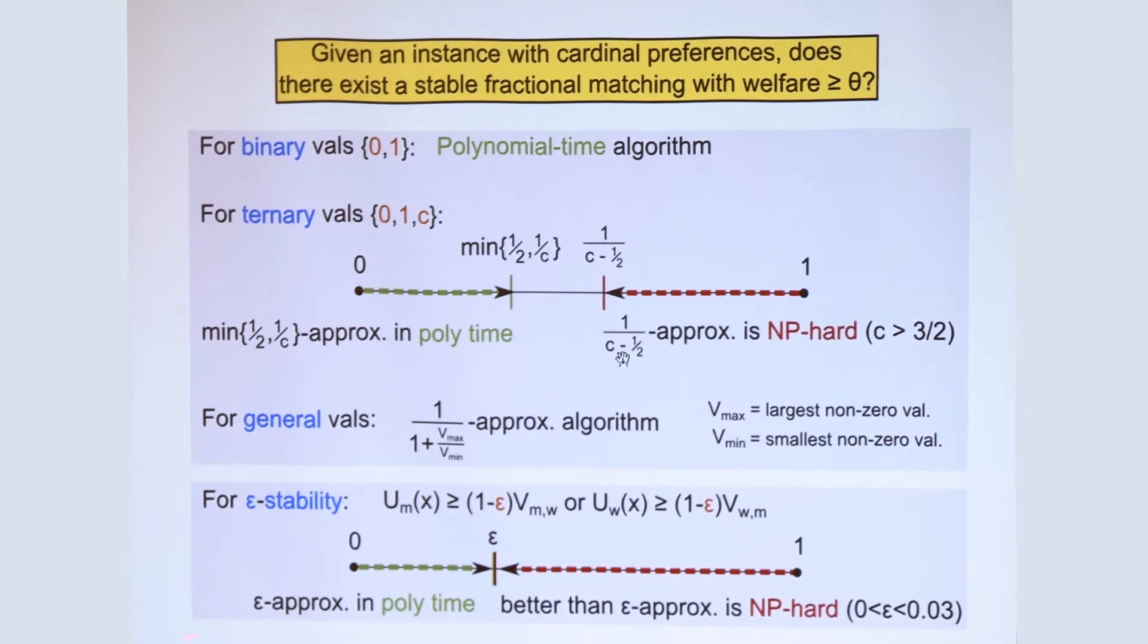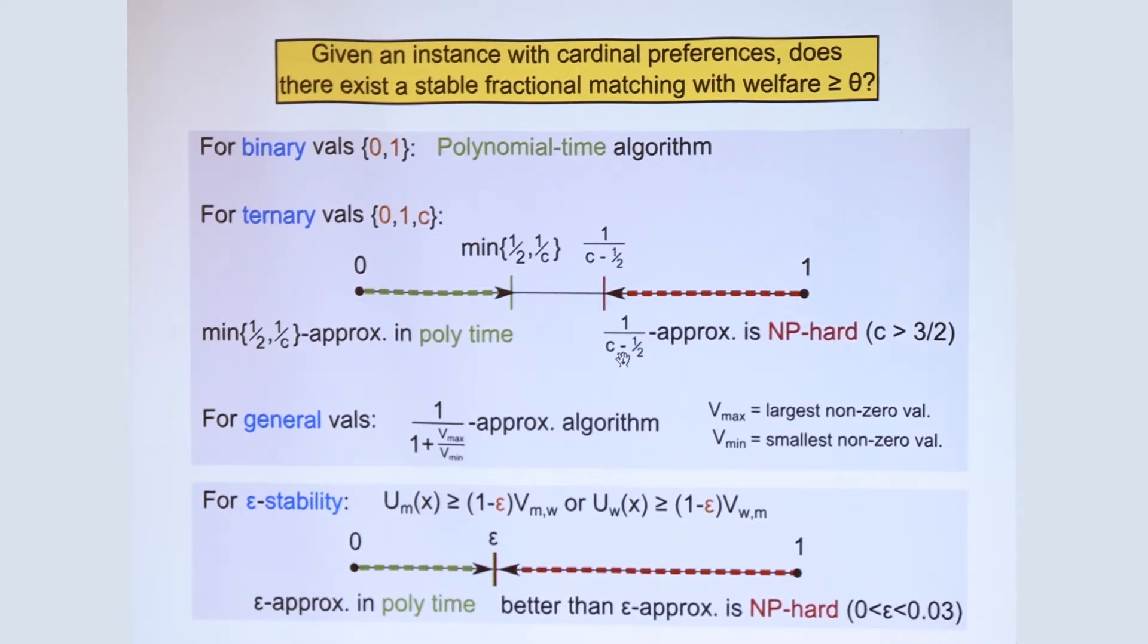And for epsilon stable matchings, we actually have matching upper and lower bounds. So it is possible to achieve epsilon approximation to the welfare in polynomial time, and I should remind you that this approximation is with respect to the broader class of epsilon stable matchings. And it turns out that doing anything better than that is computationally hard.